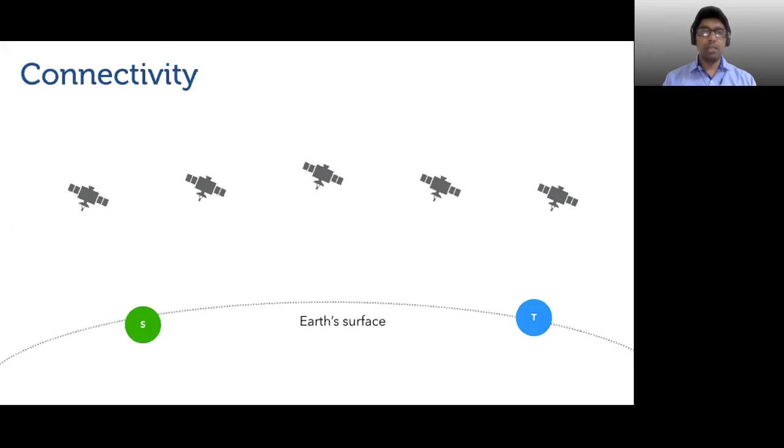Let us briefly touch upon the connectivity in these LEO networks. Let S and T be the source and target ground stations or GSS respectively. Each satellite uses radio up or down links to communicate with ground stations. A satellite can only connect to GSS from which it can be seen at sufficiently high elevation in the sky, as defined by the minimum angle of elevation.